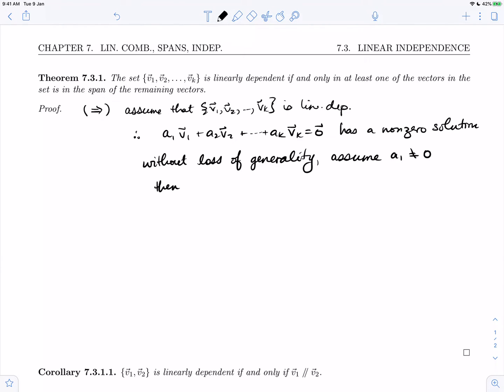Then if we rearrange the dependence equation we'll get a1v1 is minus a2v2 minus all the way up to akvk, and because we have a non-zero first coefficient we can divide each of those terms by a1.